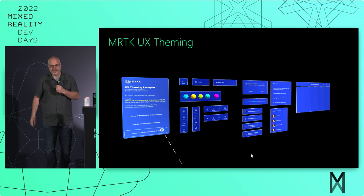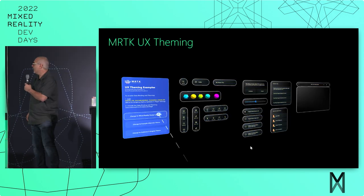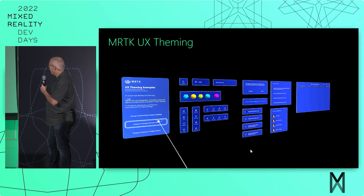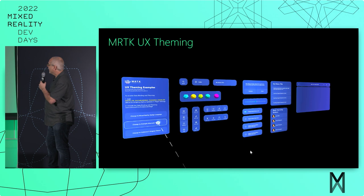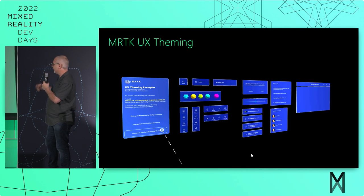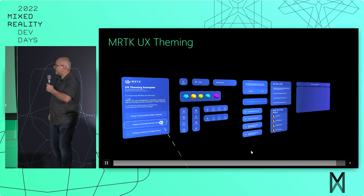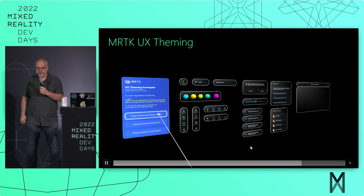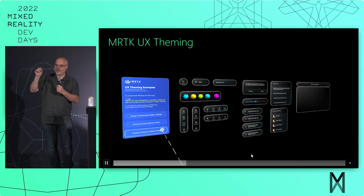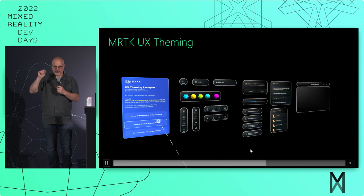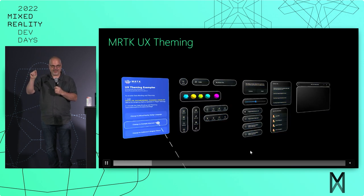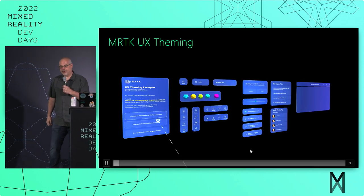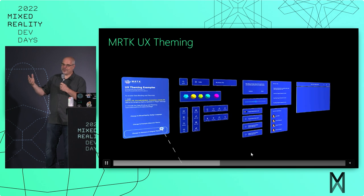Here are some examples of how comprehensive theming is — notice the rounded corners are changing, the colors are changing, the fonts. Every UX we provide has the necessary plumbing to make this work out of the box. The cool thing is if you don't want theming, there's zero footprint, zero CPU, zero anything. We made sure that if you don't want theming, it stays out of your way. If you want theming, it works as you would expect and maybe even better.